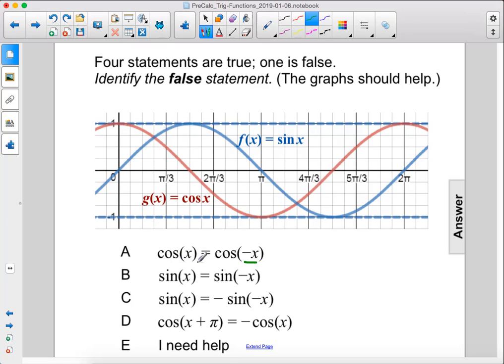So yes, cosine x does equal cosine of negative x. Since if you reflect it across there, it's already symmetrical, this is true.